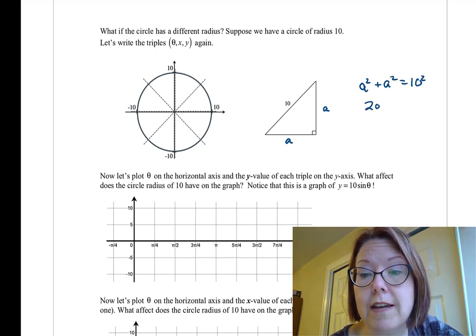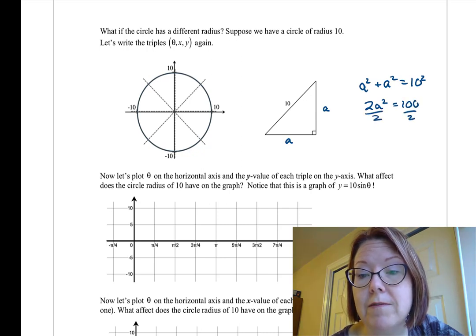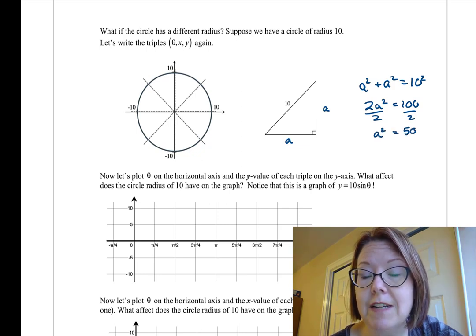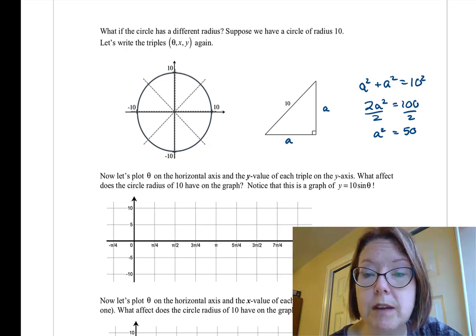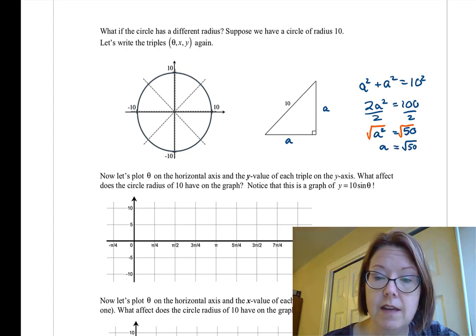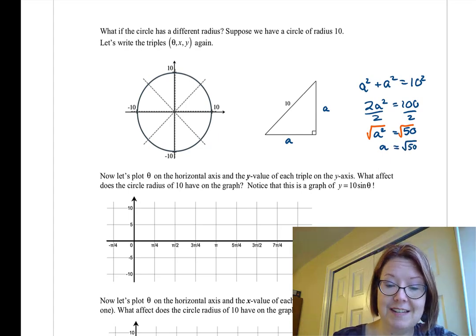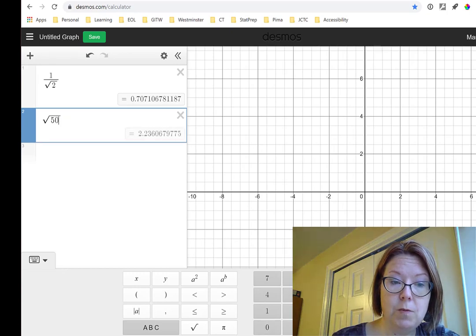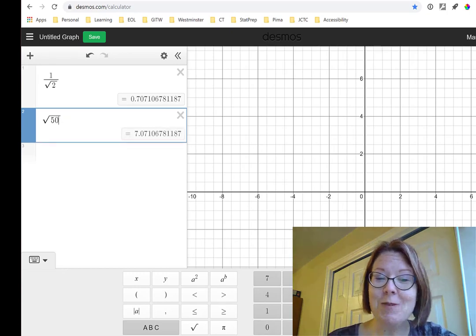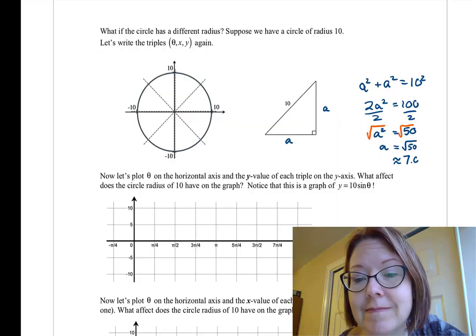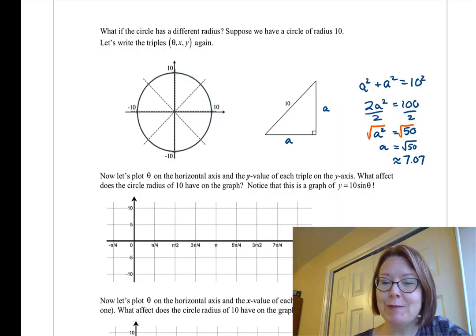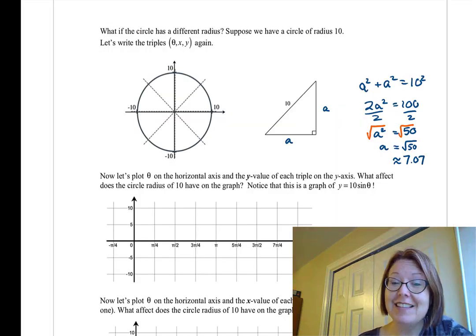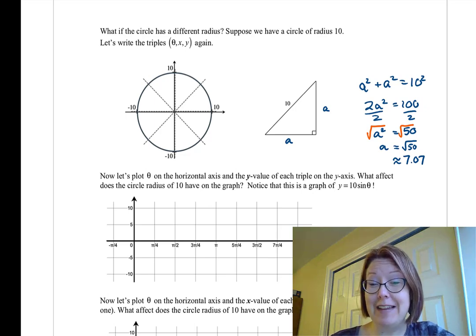So 2A squared equals 100. Dividing both sides by 2, we have A squared, and 100 over 2, which is 50. And so taking a square root on both sides, we would have A is the square root of 50. And let's work out what that is as a decimal because we'll need that to graph, and it will probably come as no big surprise to you that the square root of 50 is 7.07, which is exactly 10 times bigger than the side length when we had a hypotenuse of length 1.